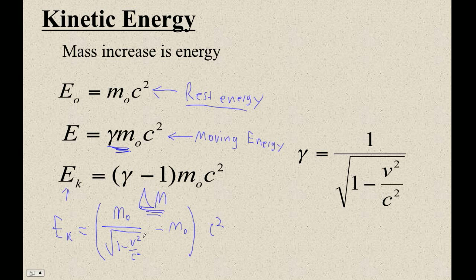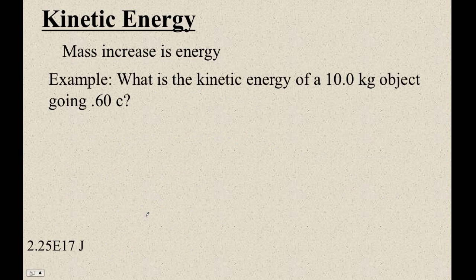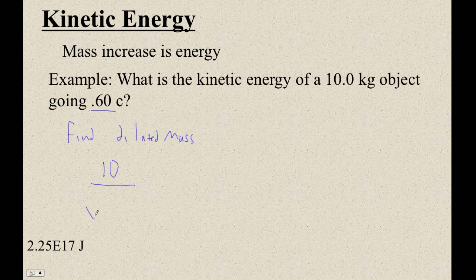Let me do some examples. A 10 kilogram object going 0.6 the speed of light. Let me find its new mass — the dilated mass. That's going to be 10 divided by the square root of 1 minus 0.6 squared. So 10 divided by the square root of 1 minus 0.36. That's 12.5, exactly. That's crazy.